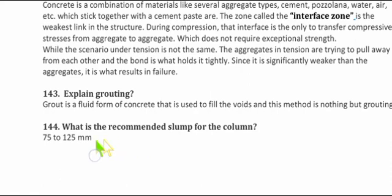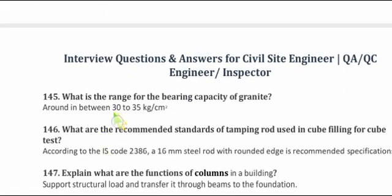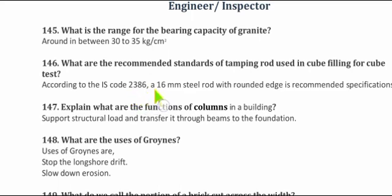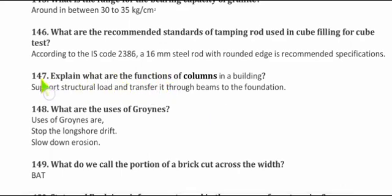Question 145: What is the range for the bearing capacity of gravel? It is approximately 30 to 35 kg per square centimeter. Question 146: What are the recommended standards for the tamping rod used in cube filling for cube tests? According to IS Code 2386, a 16 mm steel rod with a rounded edge is recommended. Question 147: What is the function of a column in buildings? A column supports the structural load and transfers it through beams to the foundations.